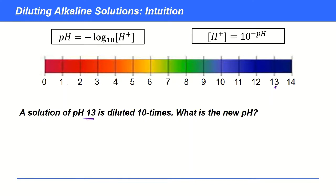Now if we had an acidic solution — something like pH 1 — then in previous videos we've shown that if you dilute that by 10 times, then that's going to cause the pH to increase by 1 unit, because the H+ concentration is going to be 10 times lower, and as a result the pH is going to be 1 unit up. Now is that the case with the alkaline solution? Is it the case that as you dilute this solution 10 times you will also go up to pH 14?